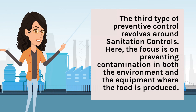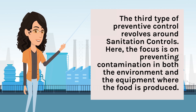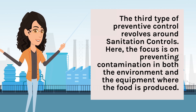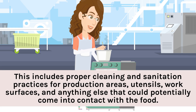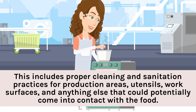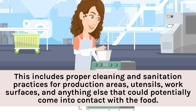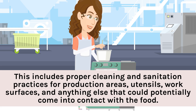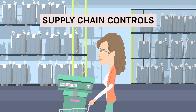Sanitation controls: The third type of preventive control revolves around sanitation controls. Here the focus is on preventing contamination in both the environment and the equipment where the food is produced. This includes proper cleaning and sanitation practices for production areas, utensils, work surfaces, and anything else that could potentially come into contact with the food supply.